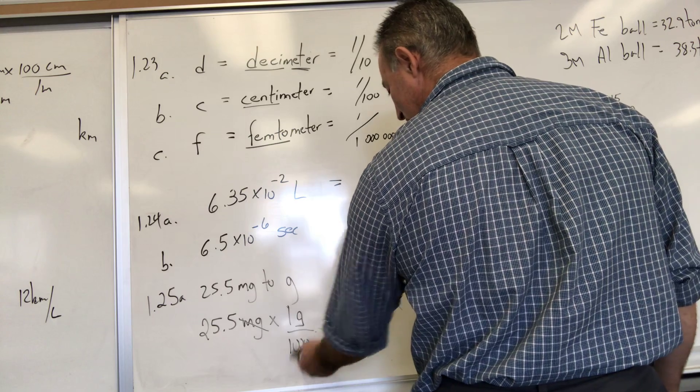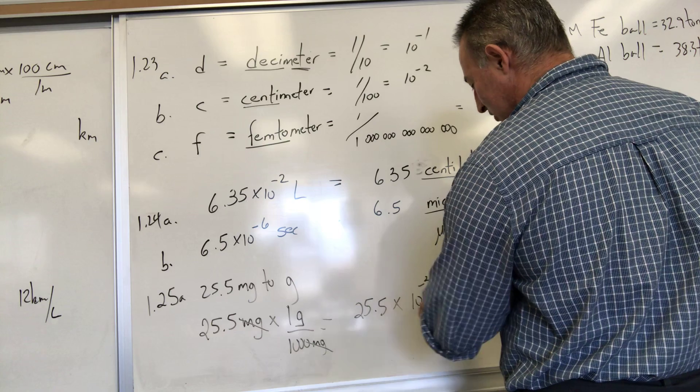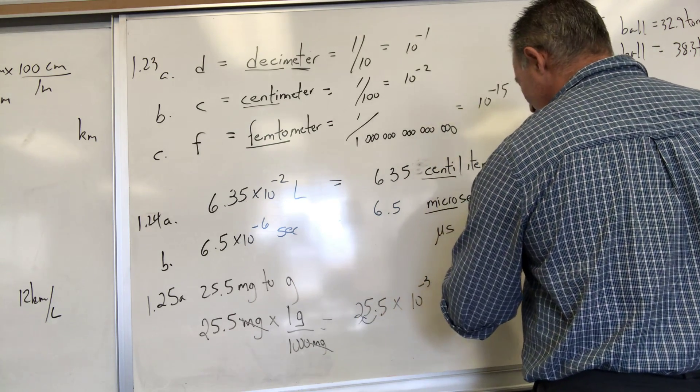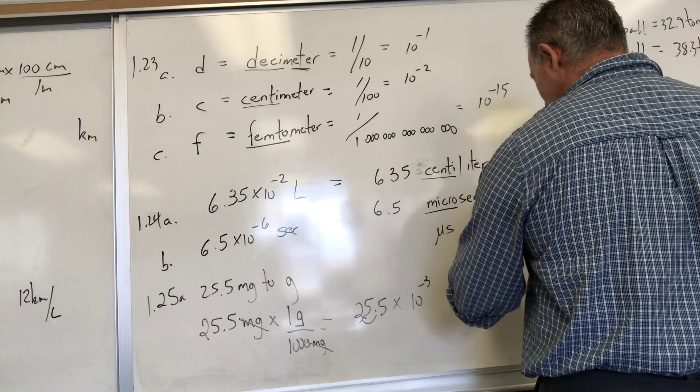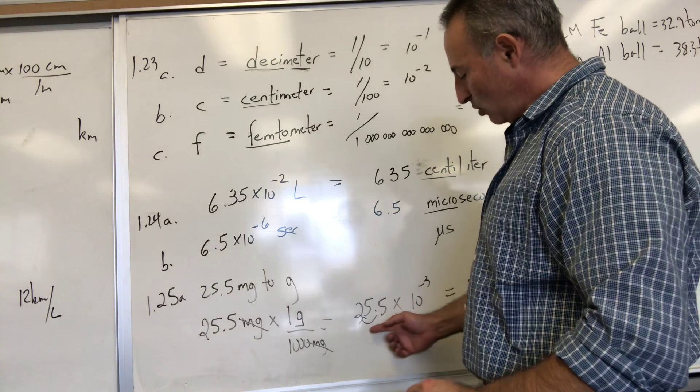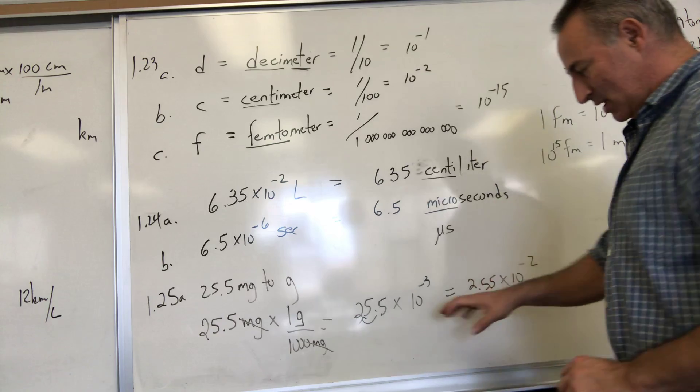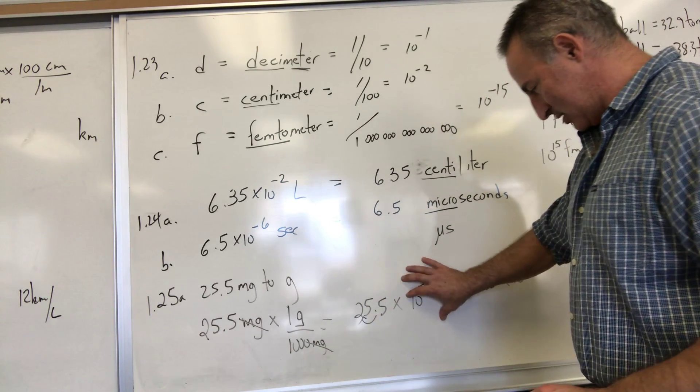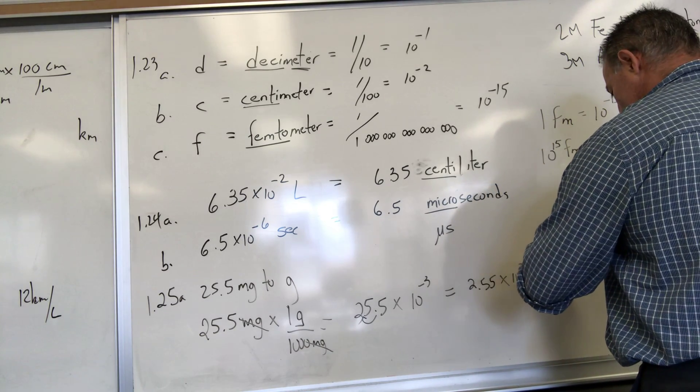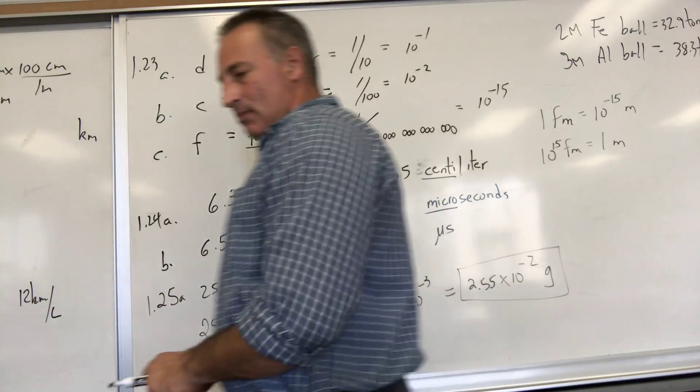Because there's one gram per thousand milligrams, your answer is going to be 25.5 times 1/1000, which you can rewrite as 10 to the minus three. To change it to scientific notation, I move the decimal over by one so I get 2.55 times 10 to the minus two. I moved the decimal over by one jump, so I have to raise the power by one. 2.55 times 10 to minus two grams equals 25.5 milligrams.